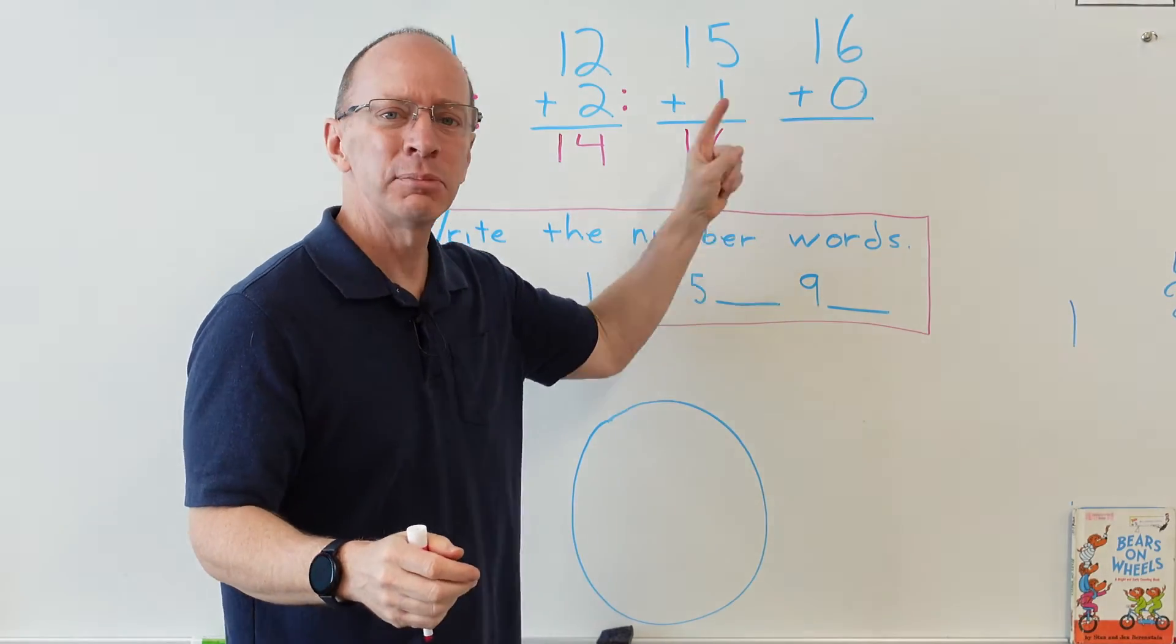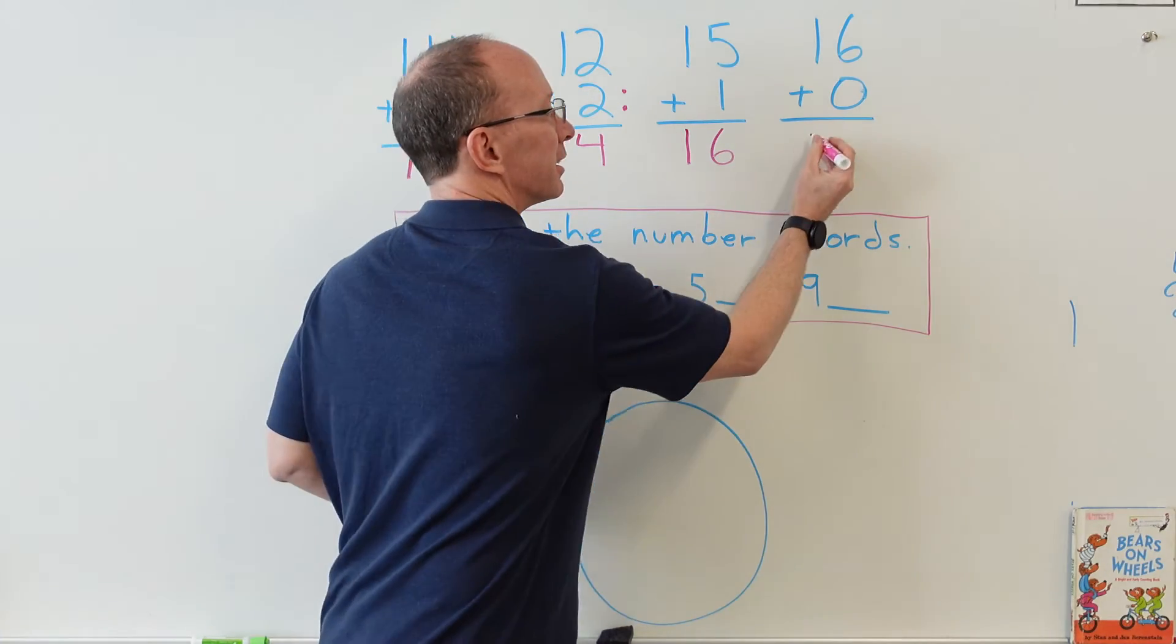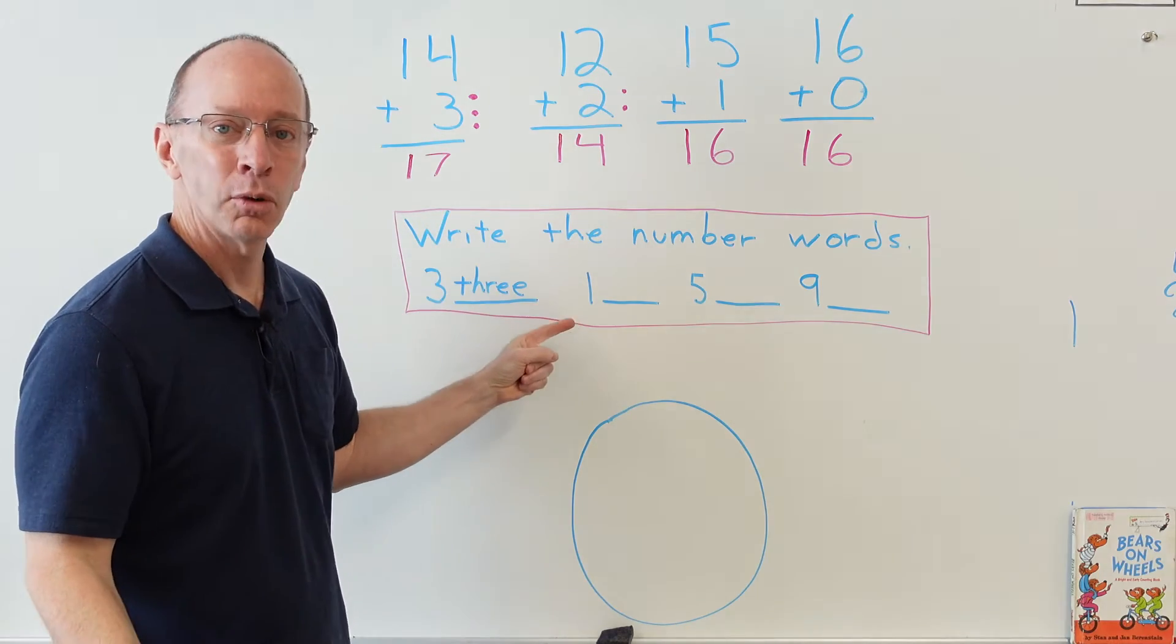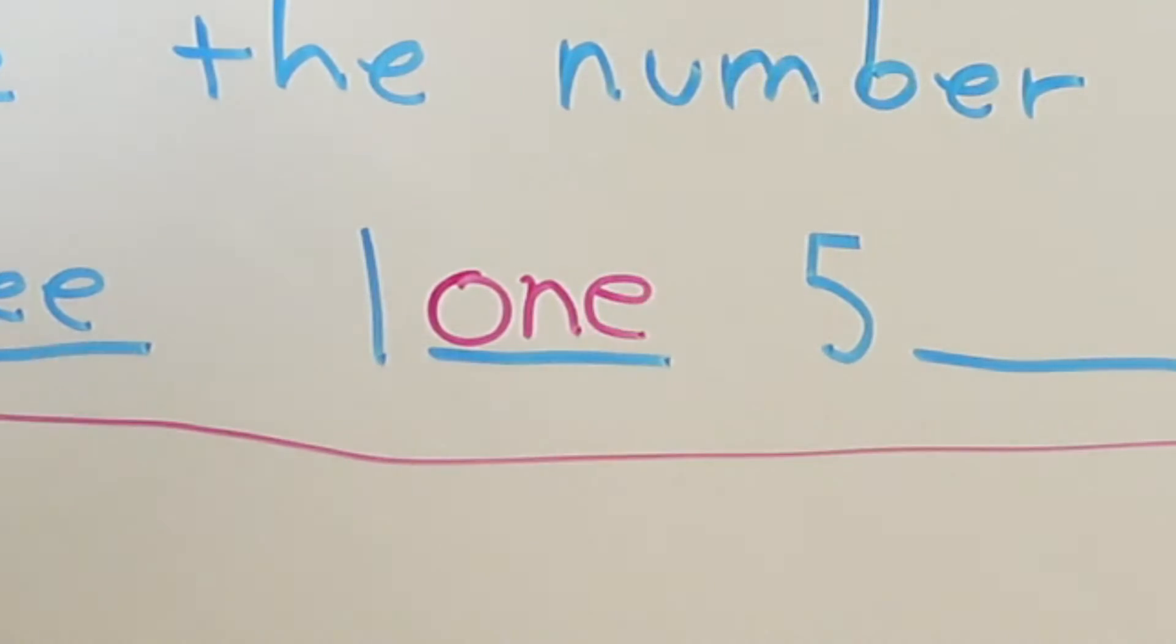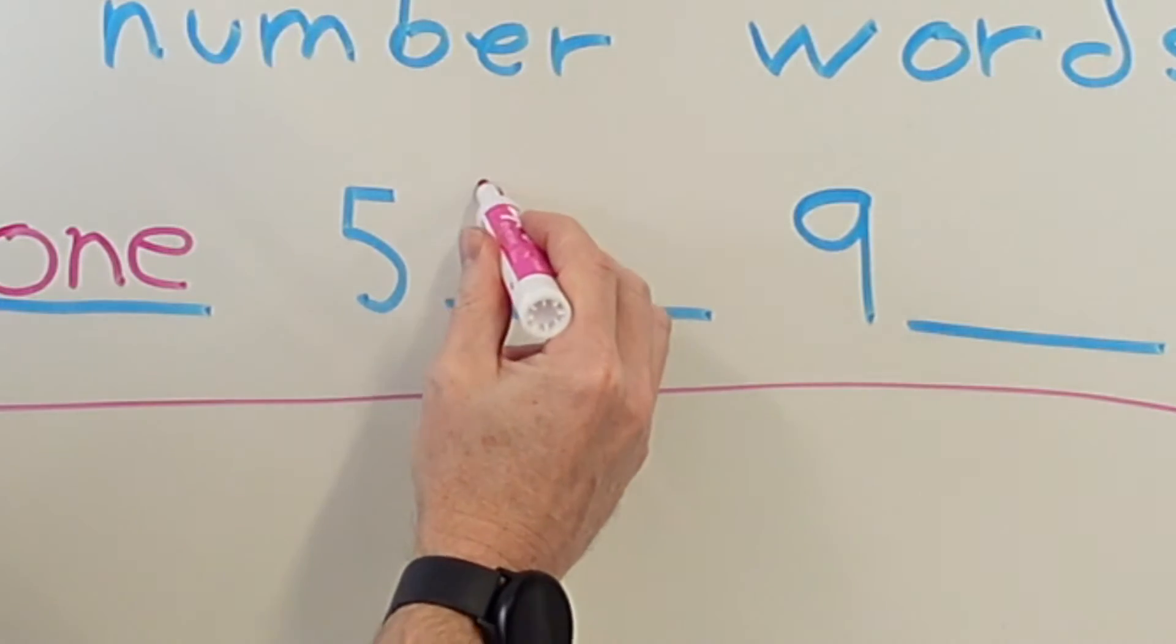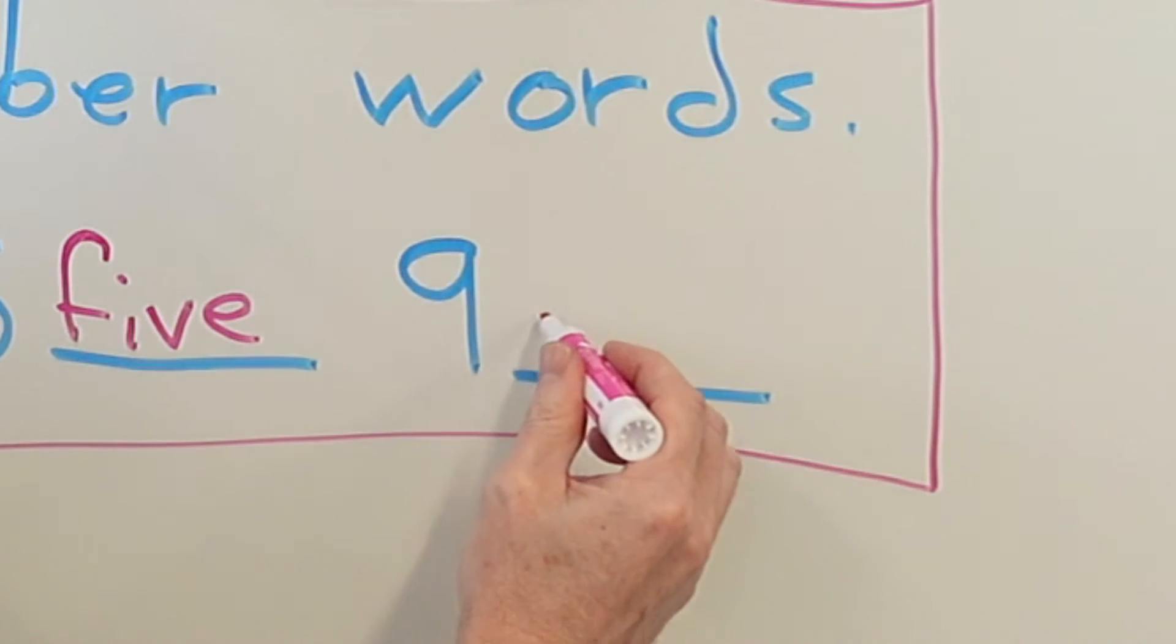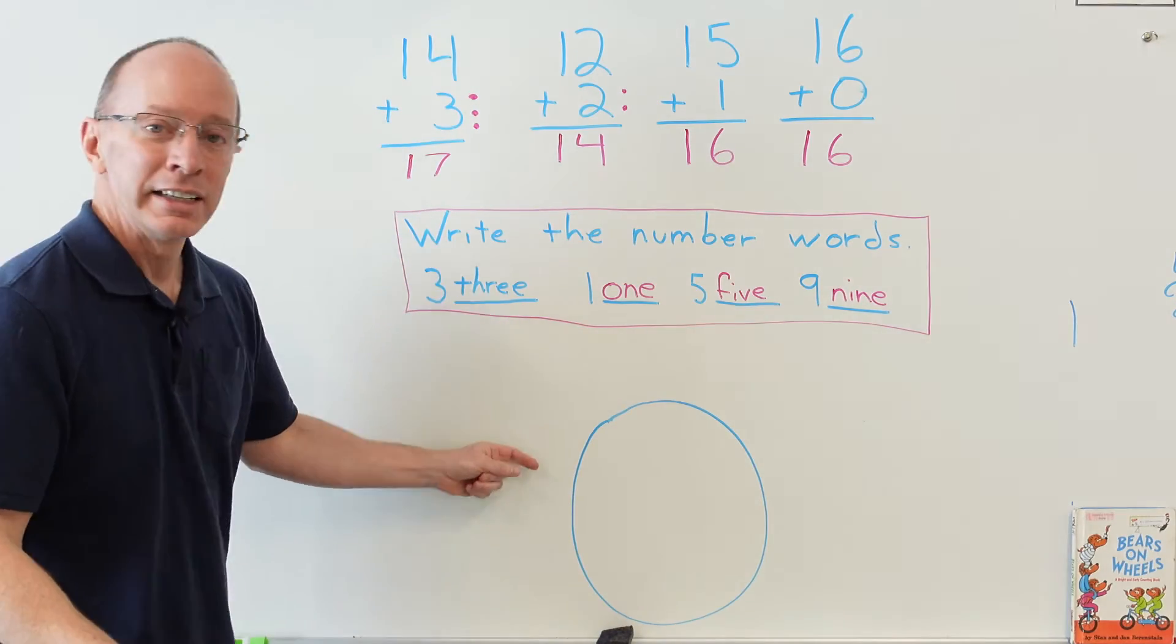Now we have write the number words. We had three already. Here is one, spelled O-N-E. Then we have the number five - we're going to write the word for five, and that is F-I-V-E. And then we have the number nine, so let's write the word N-I-N-E.